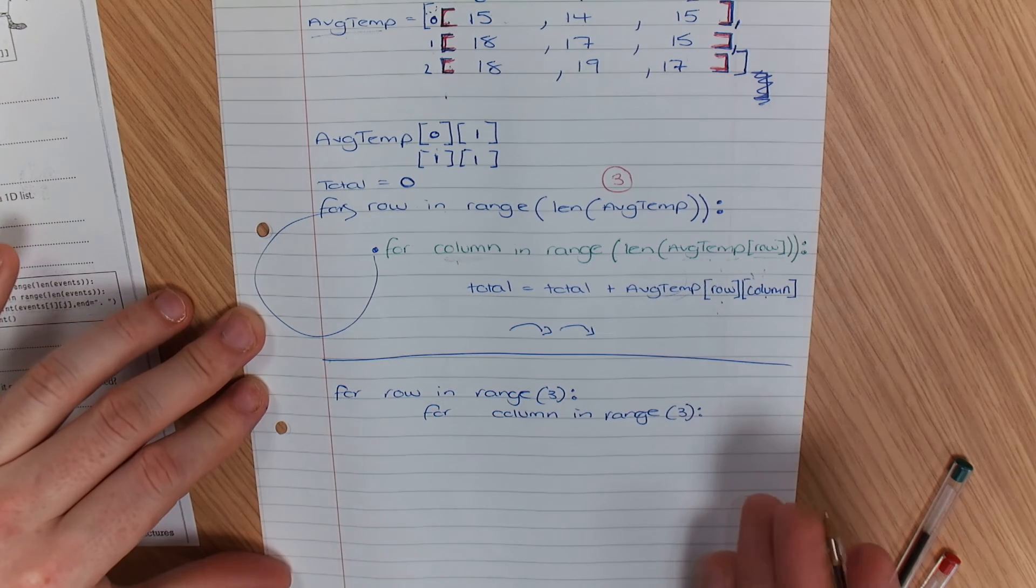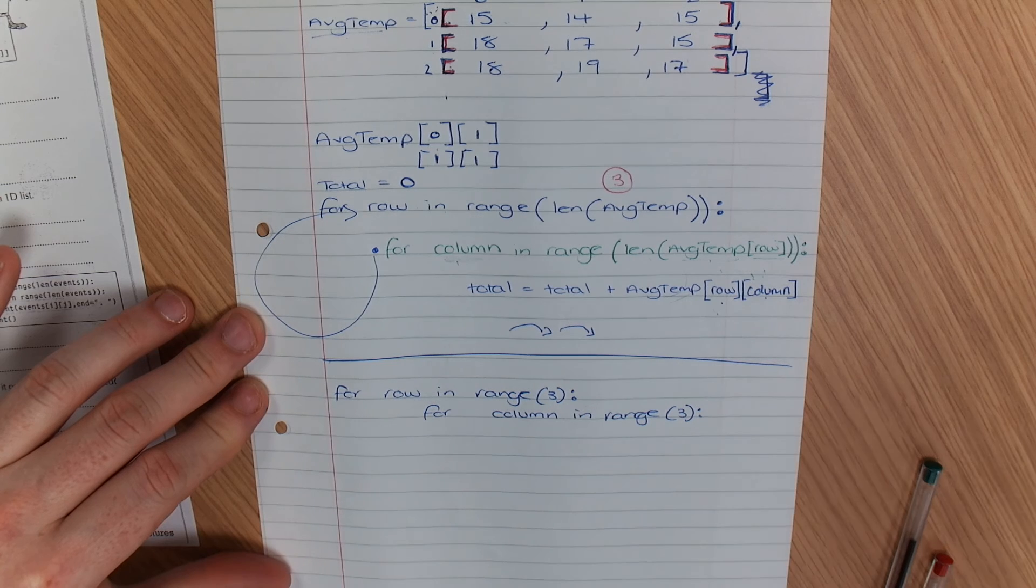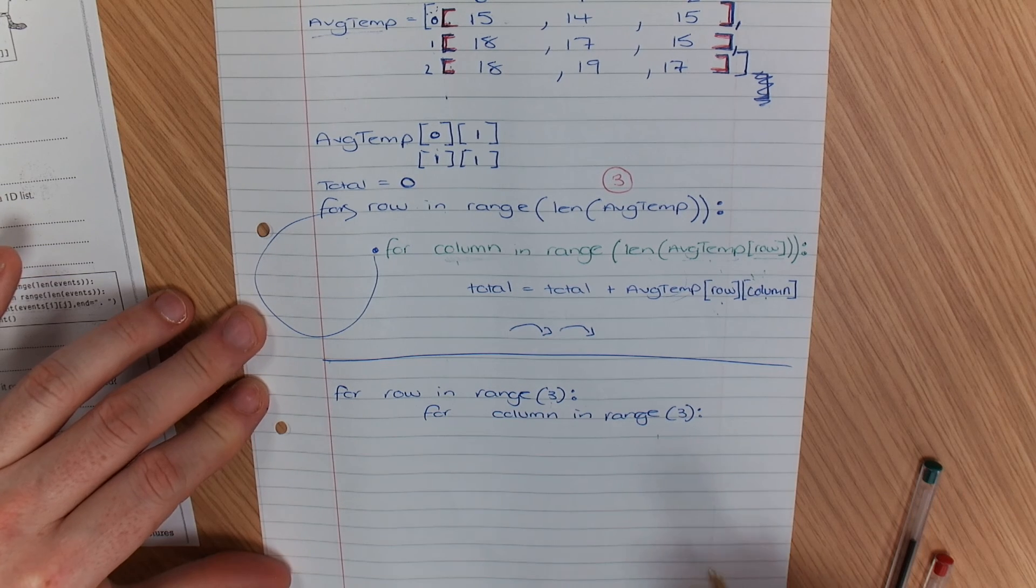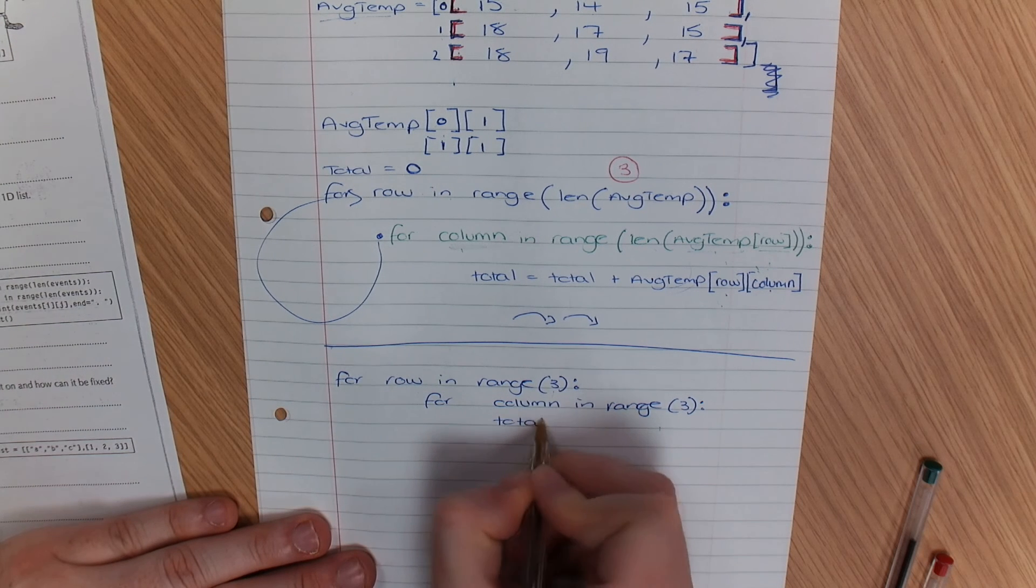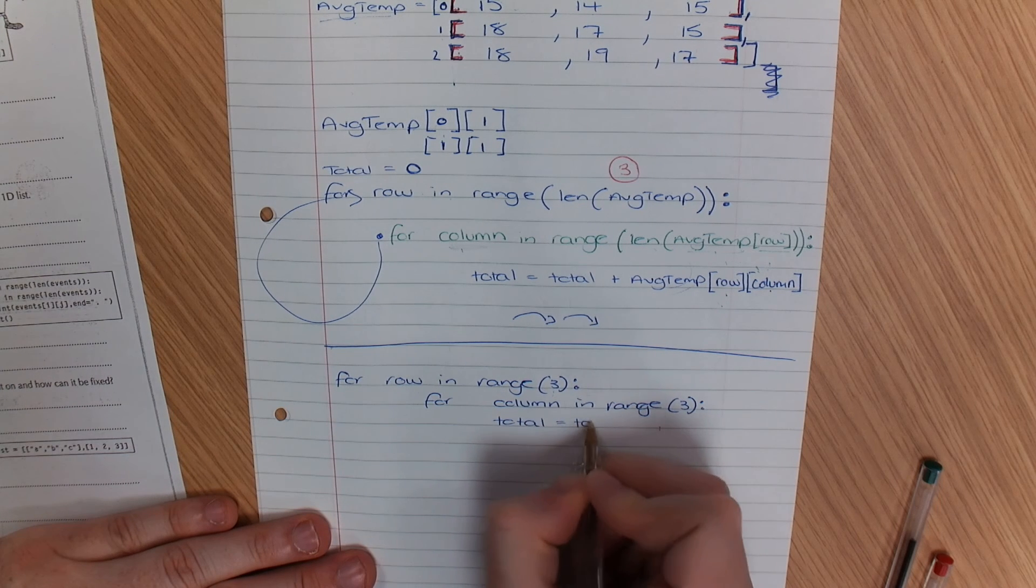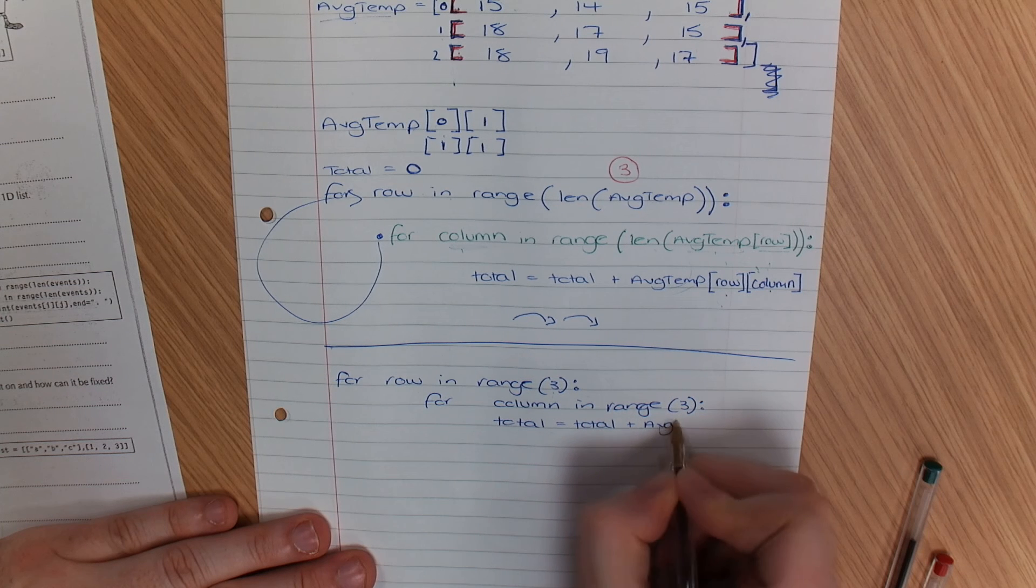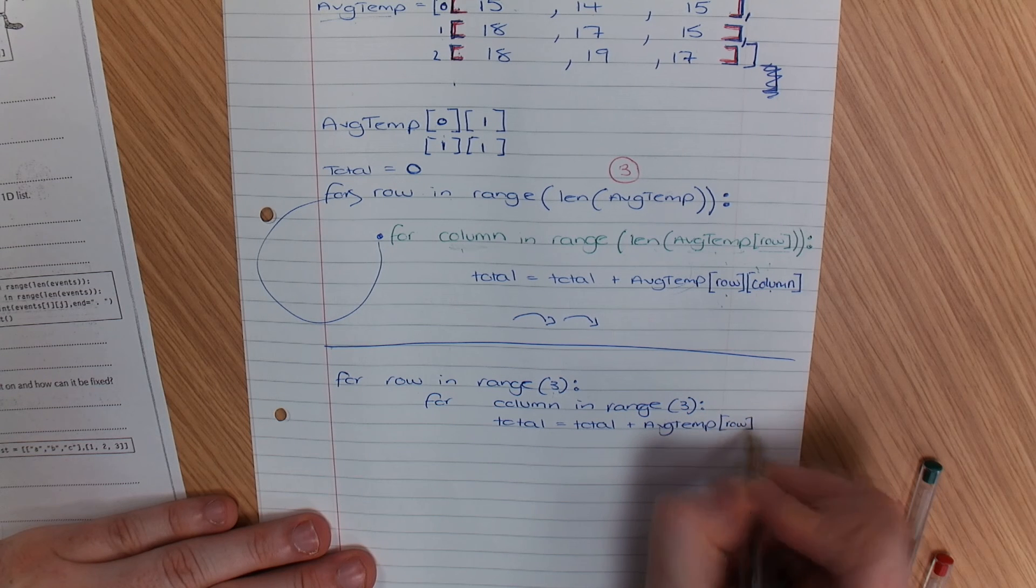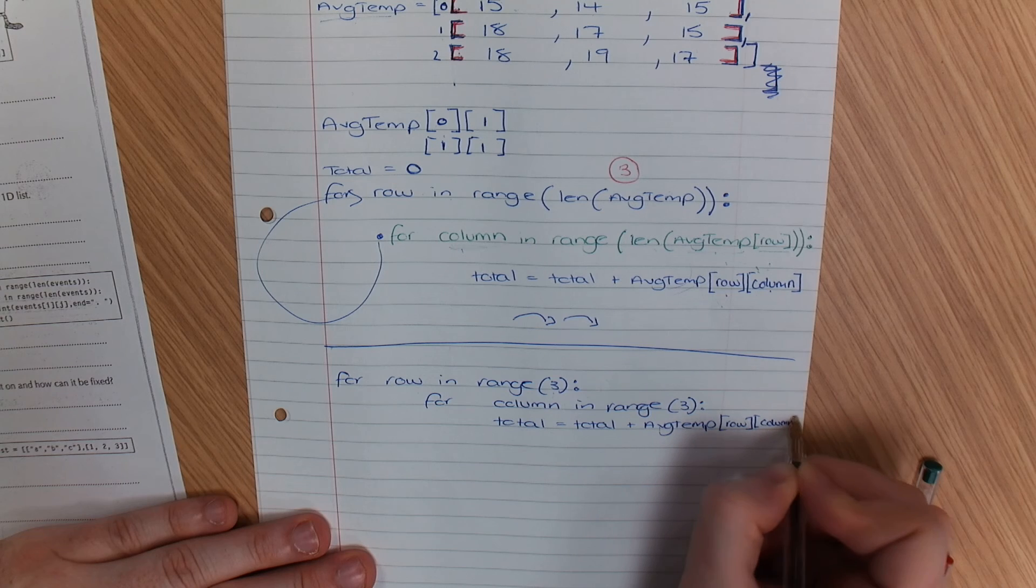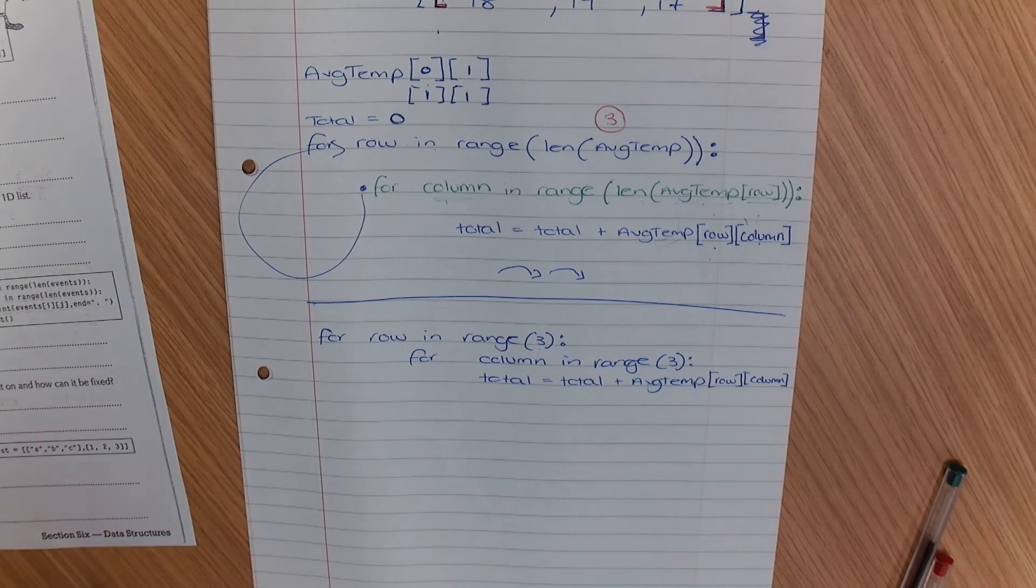So if you don't want to use len, you can just use - you know how many items are in it, so you could just set it to three, and then what you could do is total equals total plus avg temp row column. And it should give you the same desired effect.